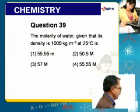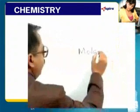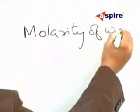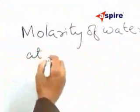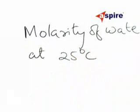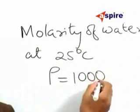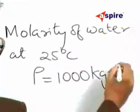In this problem, you are asked to calculate the molarity of water at a temperature of 25 degrees centigrade, given that the density of water is 1000 kilogram per meter cube.